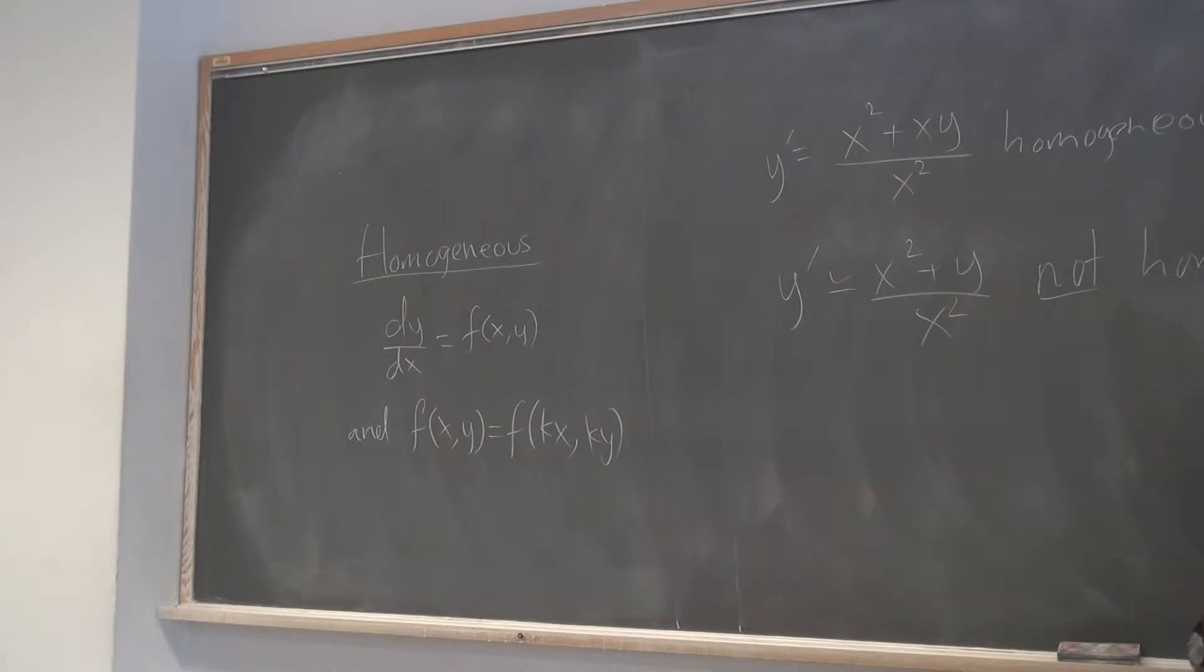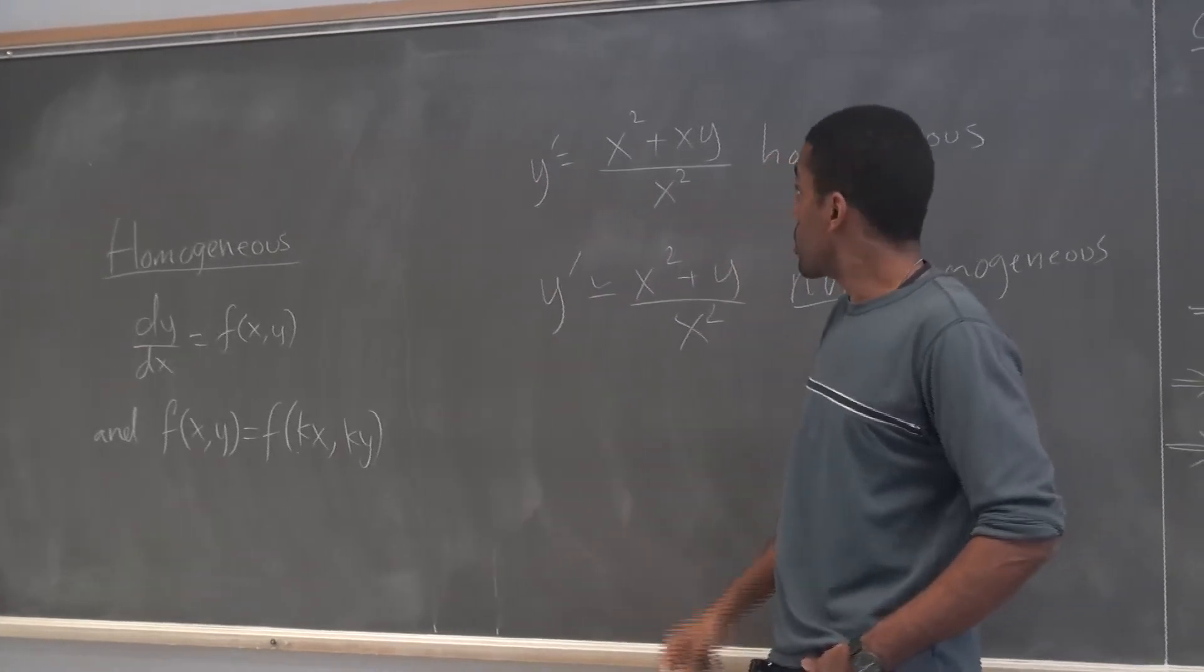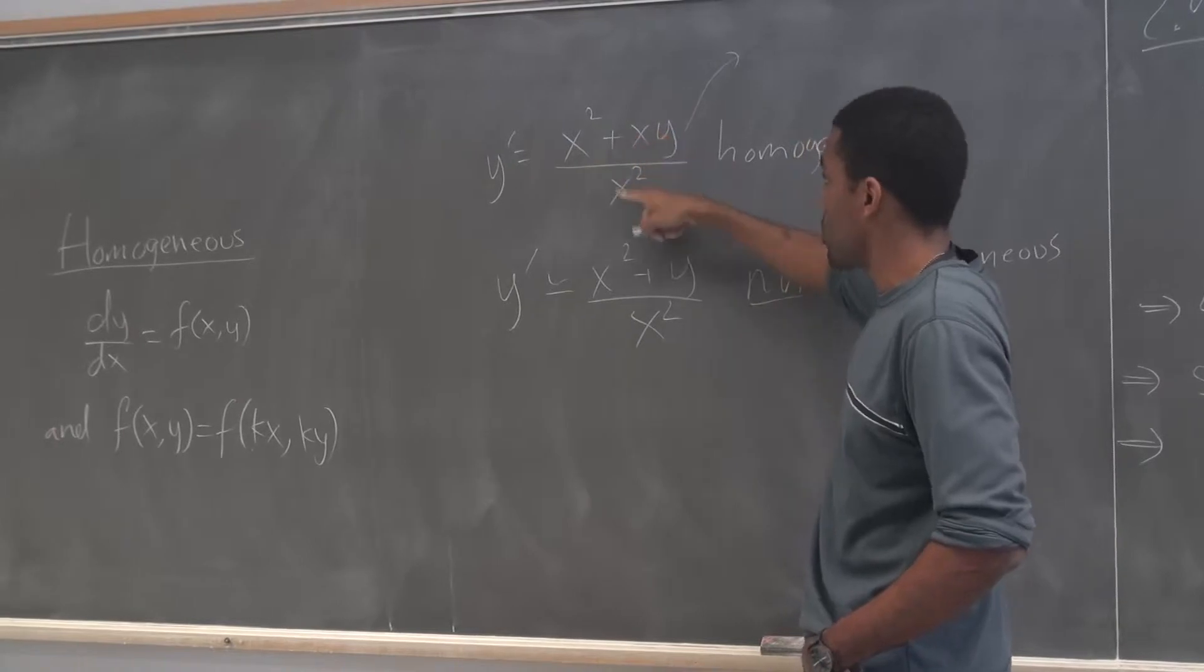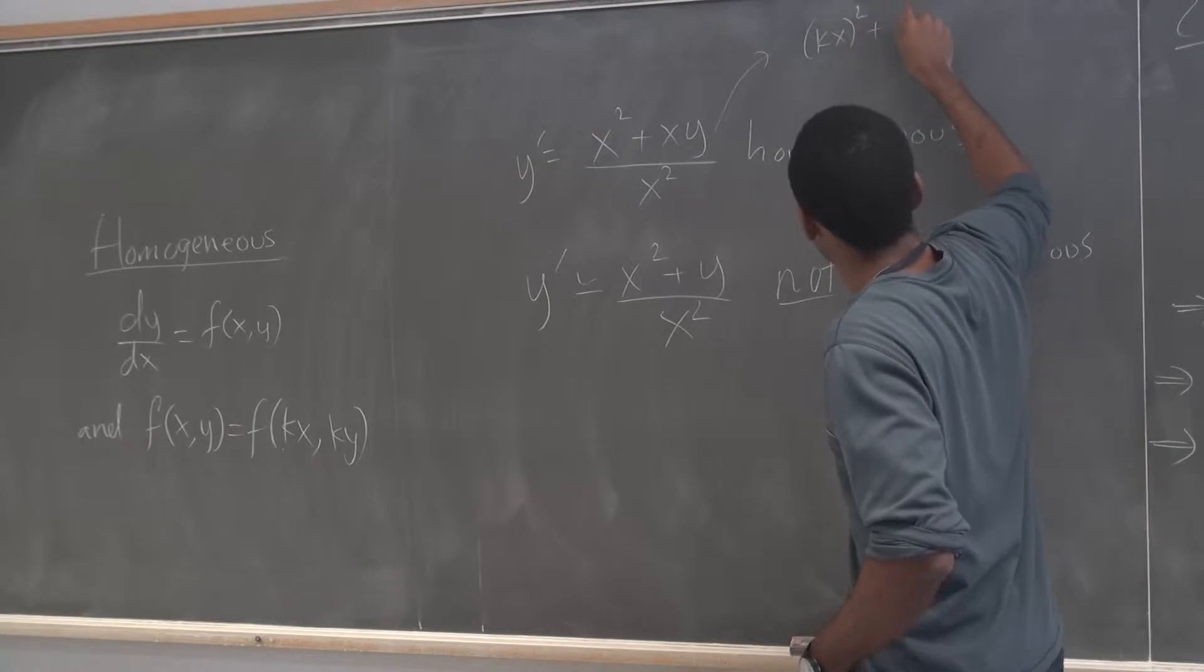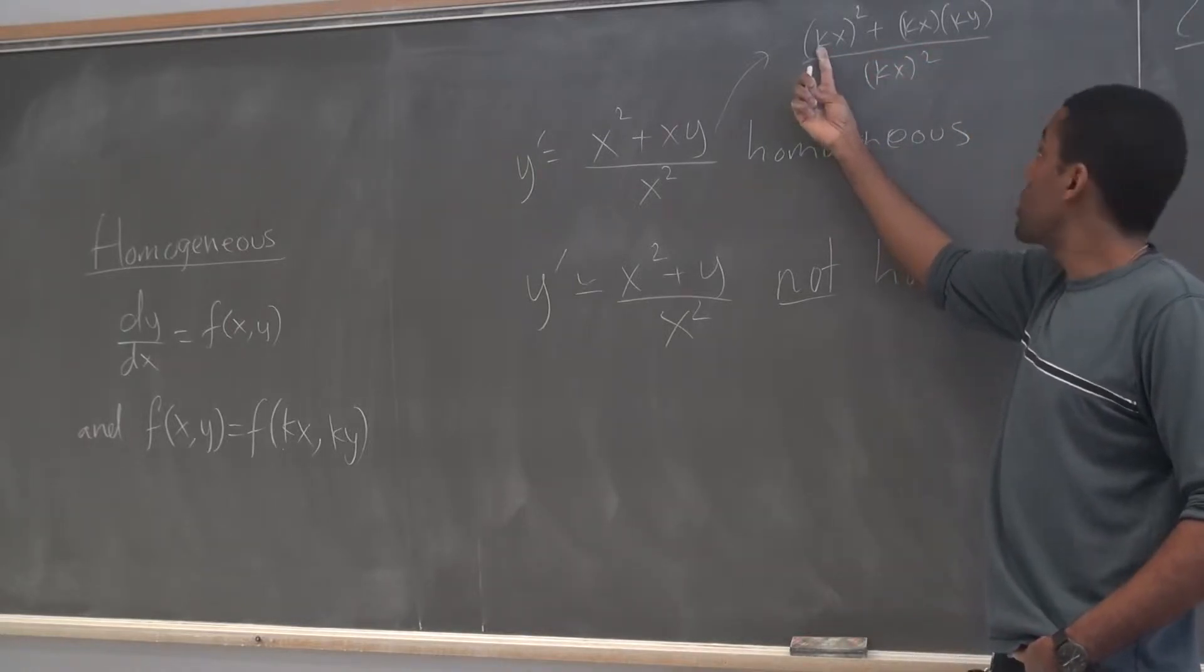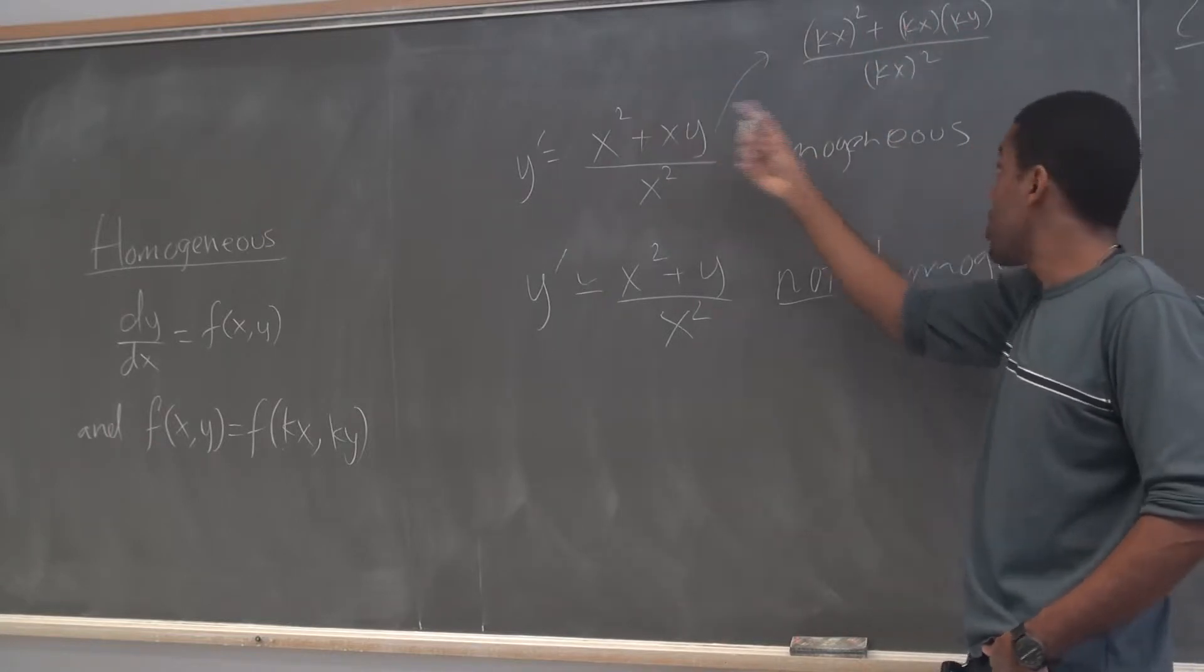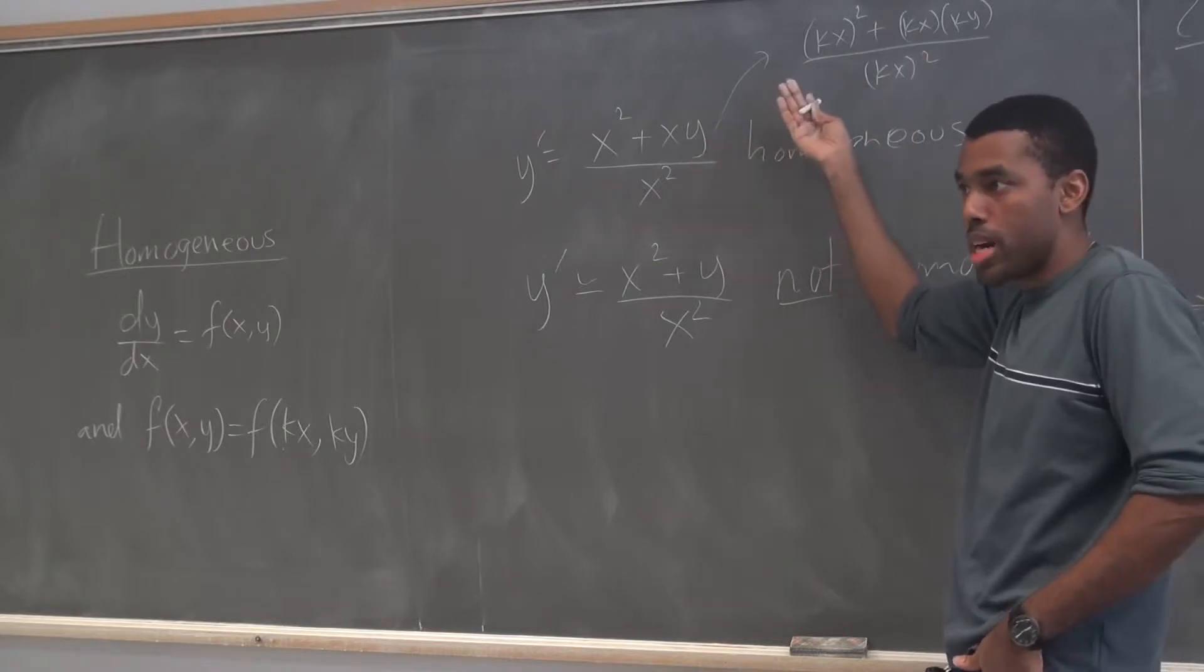The difference is this works for this, but it doesn't work for this. See, in this situation, if I replace all the x's with kx's and all the y's with ky's, I would get kx squared plus x times ky over kx all squared. But you see there would be a k squared factor here. K times k would give me a k squared factor there, so I can factor that out. And then I can factor the k squared factor out here, all the k's would cancel, and I get the original back.